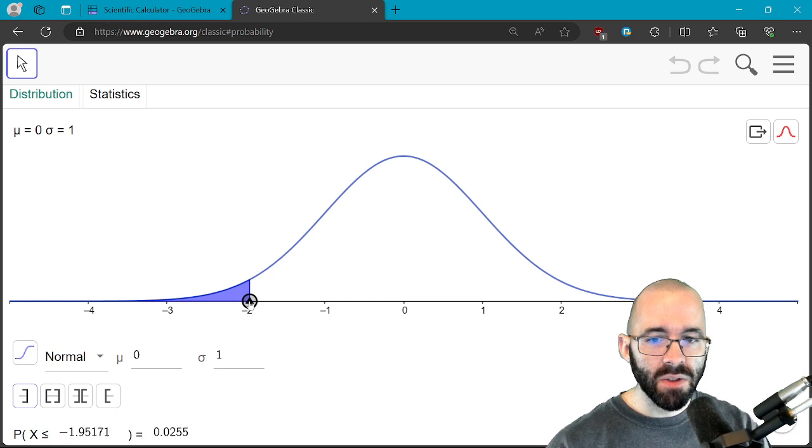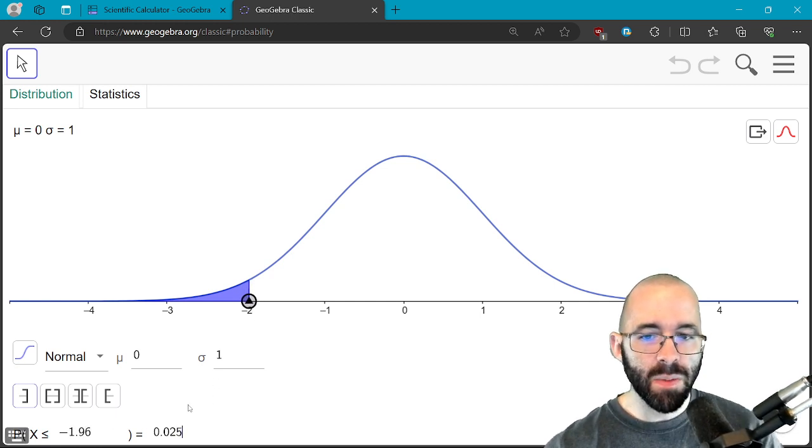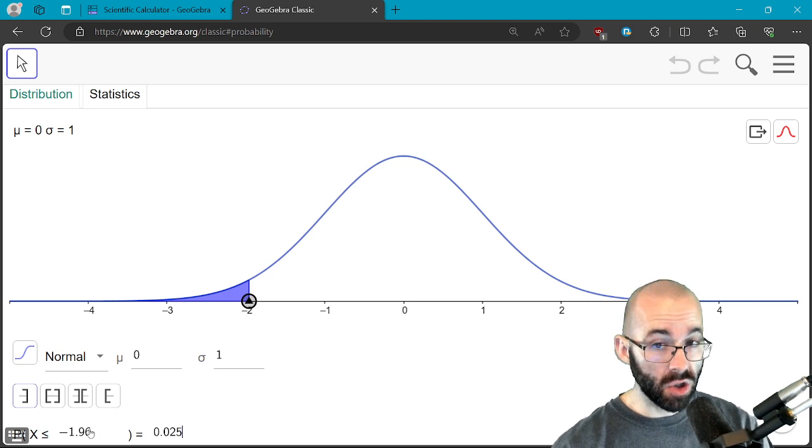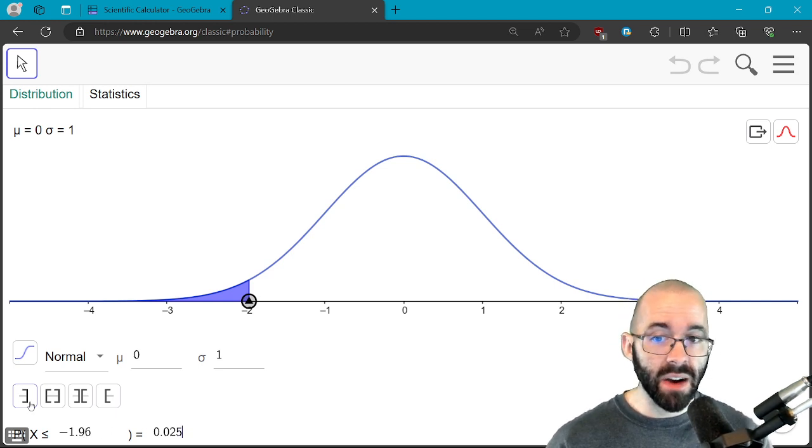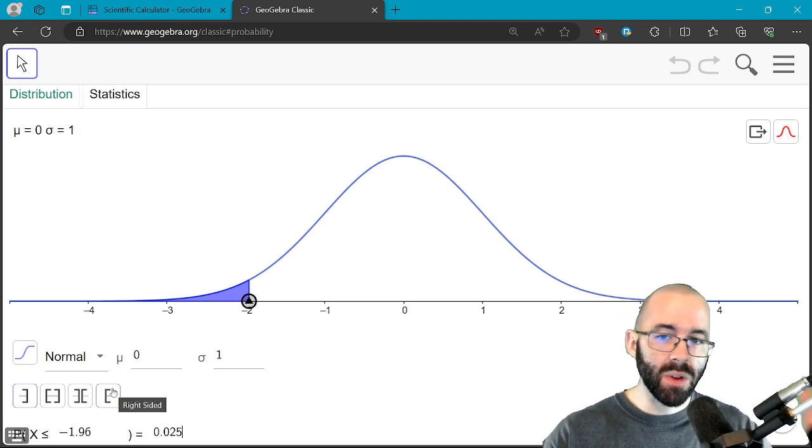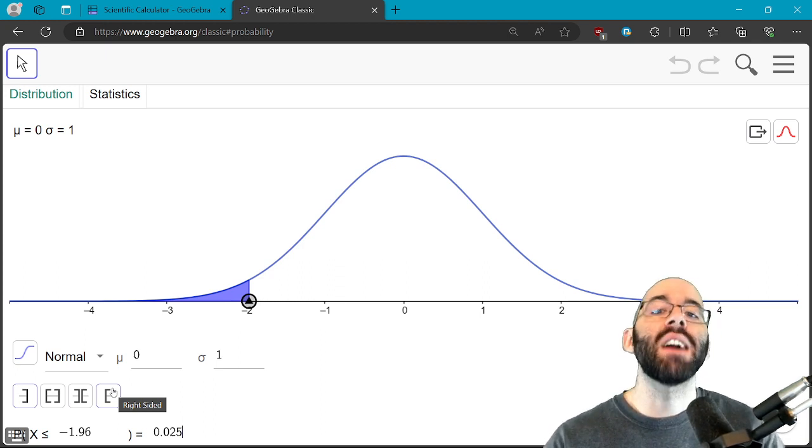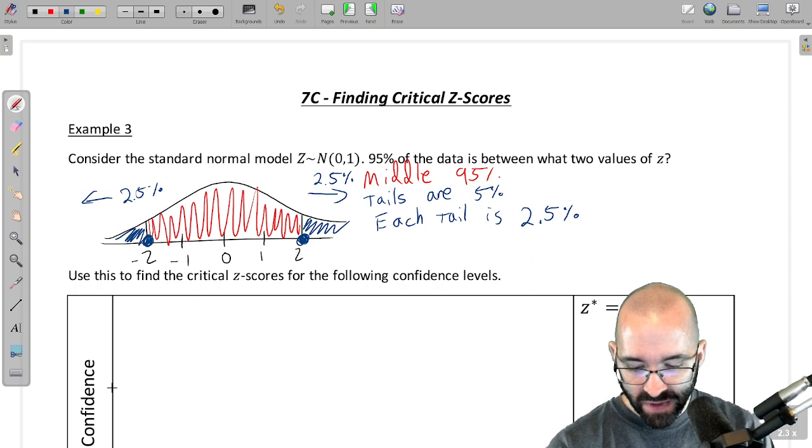So we can find it roughly, but let's be more precise. Let's actually type in 2.5% and you'll get a z-value of, it's close to negative two, just like we expected, right? Because 95% is within about two standard deviations, well it's really 1.96 standard deviations. So we can get much more closer here.